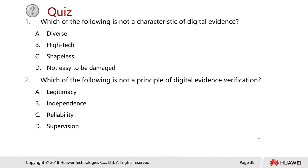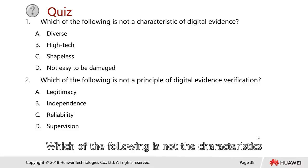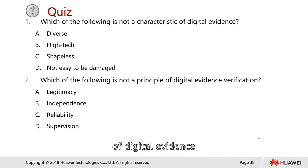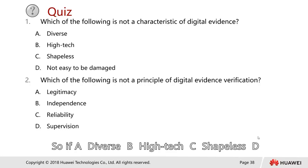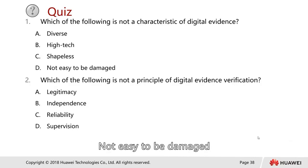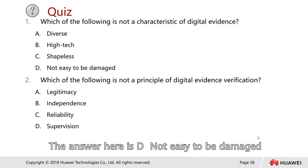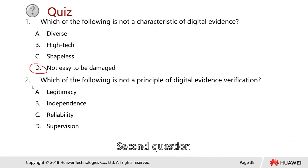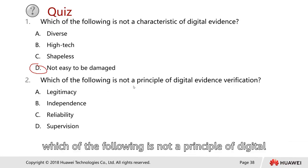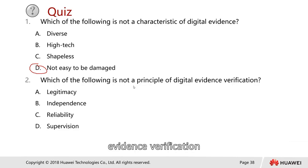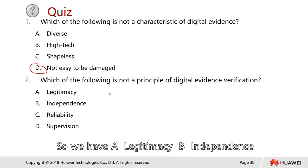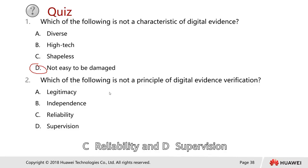Quiz: Which of the following is not a characteristic of digital evidence? A. Diverse, B. High-tech, C. Shapeless, D. Not easy to be damaged. The answer is D — not easy to be damaged. Second question: Which of the following is not a principle of digital evidence verification? A. Legitimacy, B. Independence, C. Reliability, D. Supervision. The answer is C — reliability.